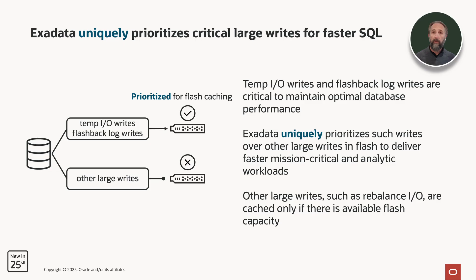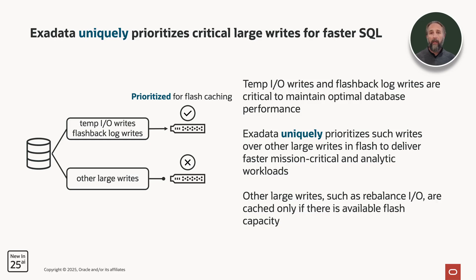Exadata uniquely prioritizes critical large writes for faster SQL. Camp IO writes and flashback log writes are critical to maintaining optimal database performance. In Exadata System Software 25.2, we uniquely prioritize such writes over other large writes in flash to deliver faster mission-critical and analytic workloads. Other large writes, such as rebalance IO, are cached only if there is available flash capacity.